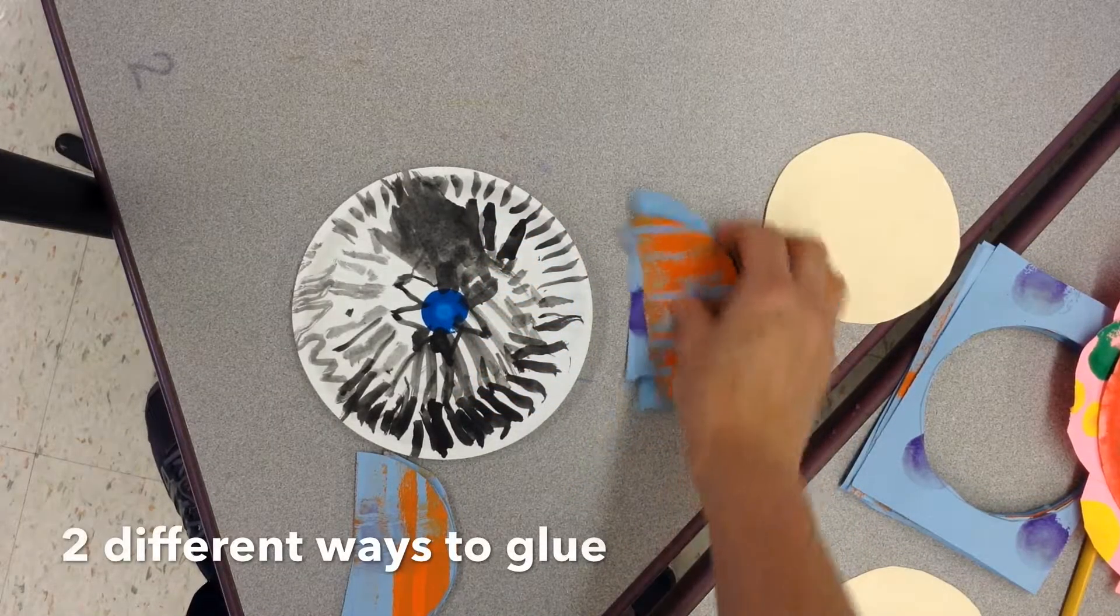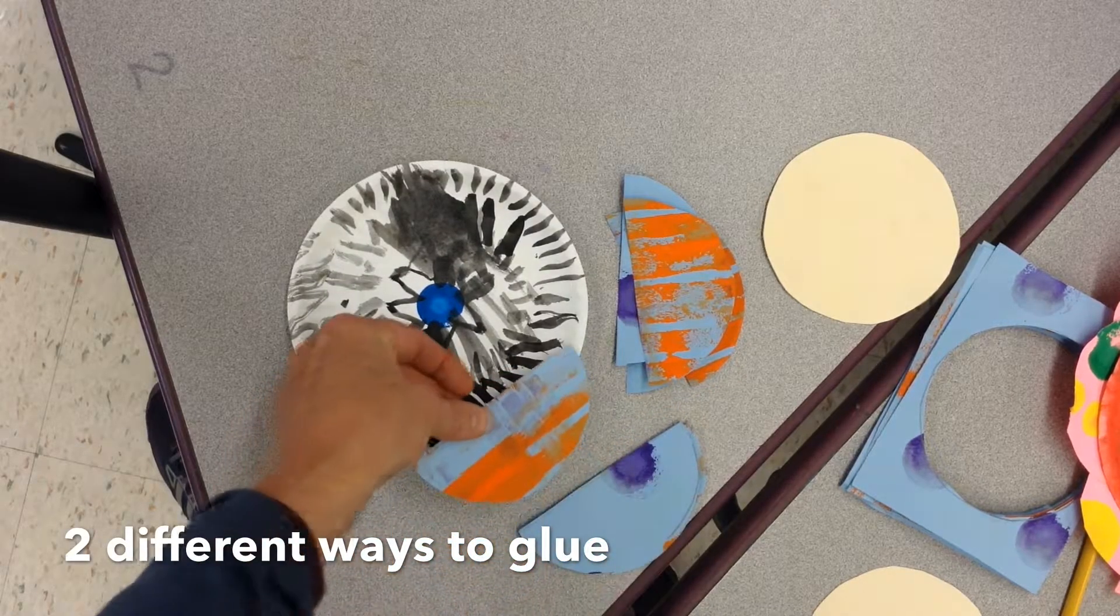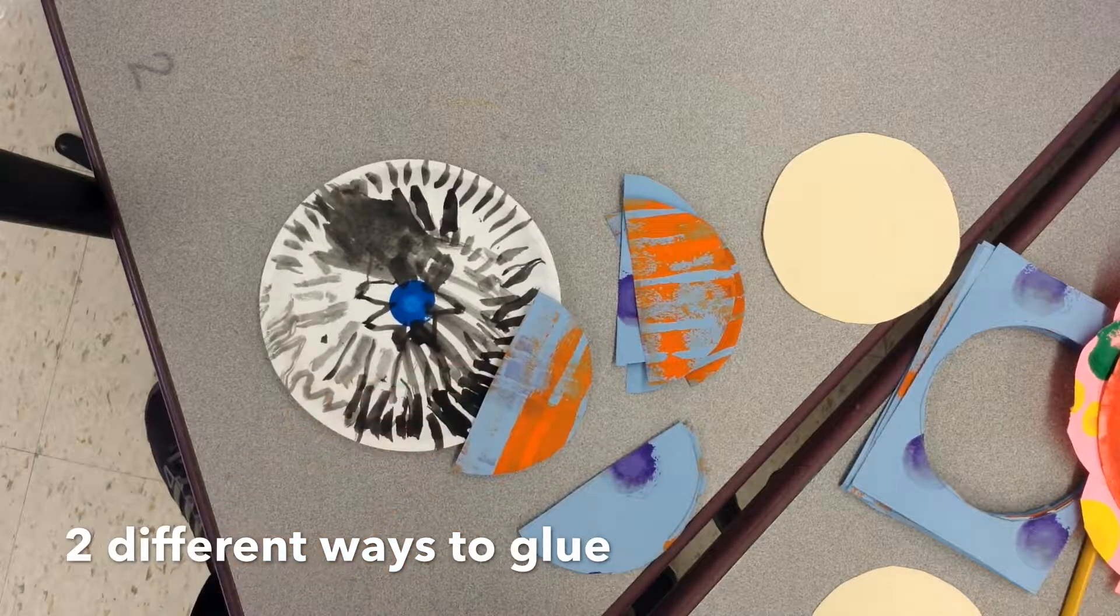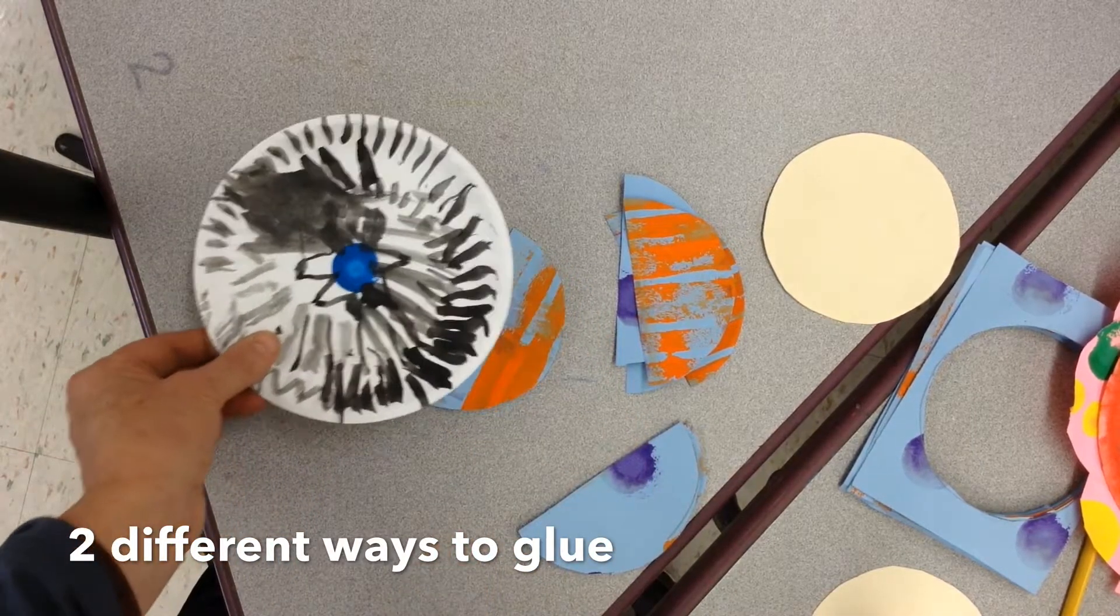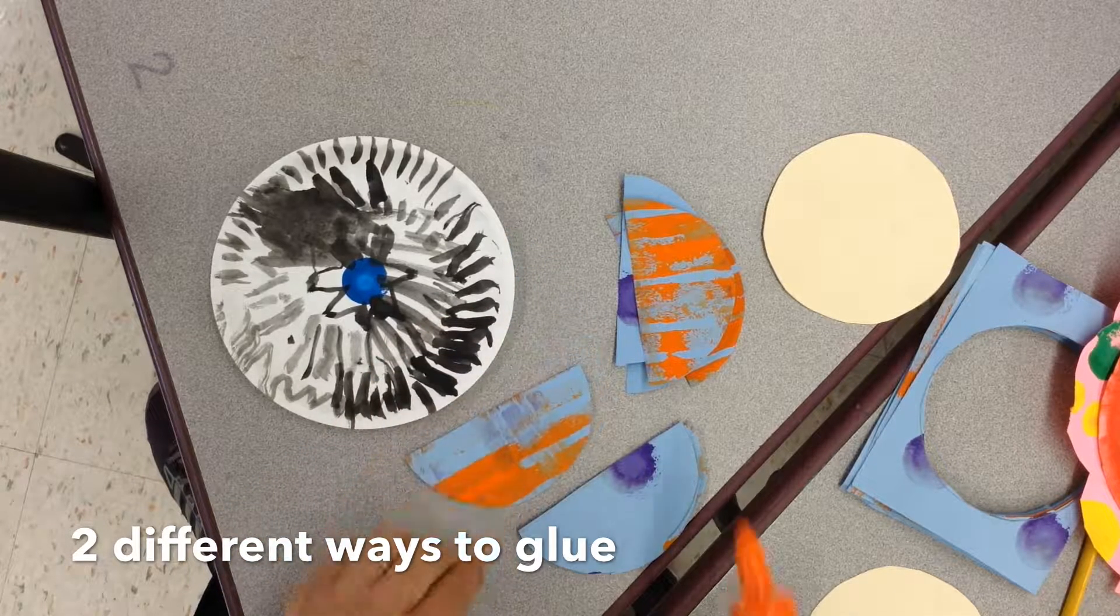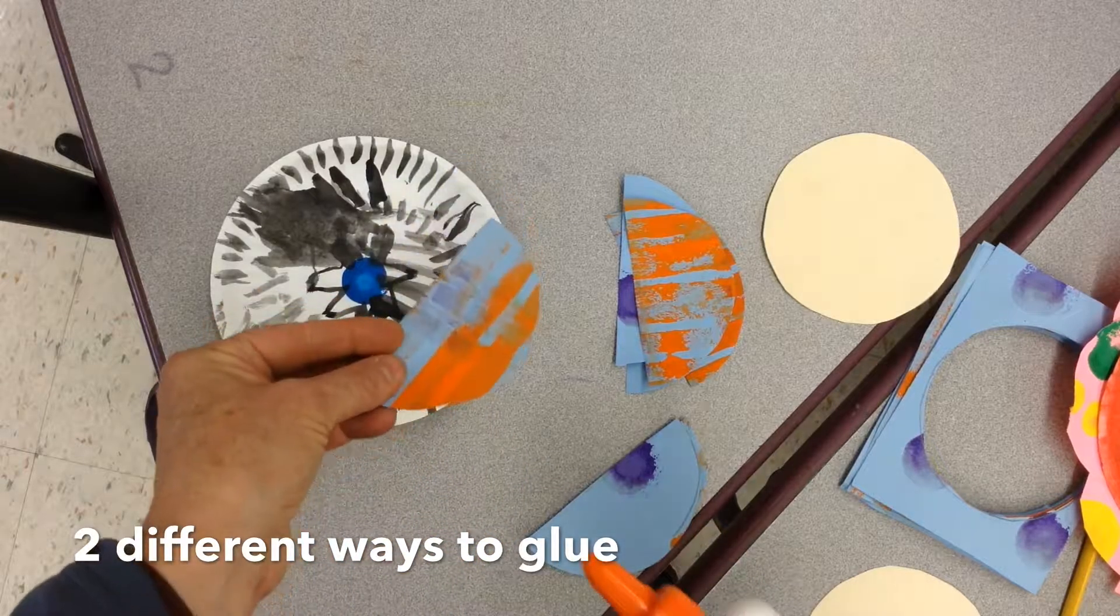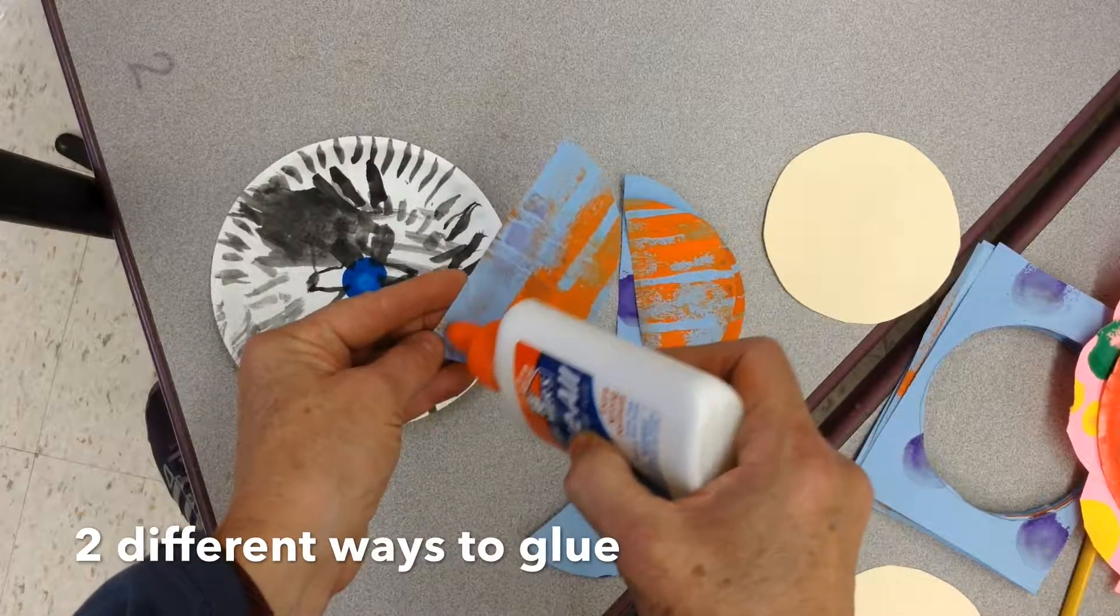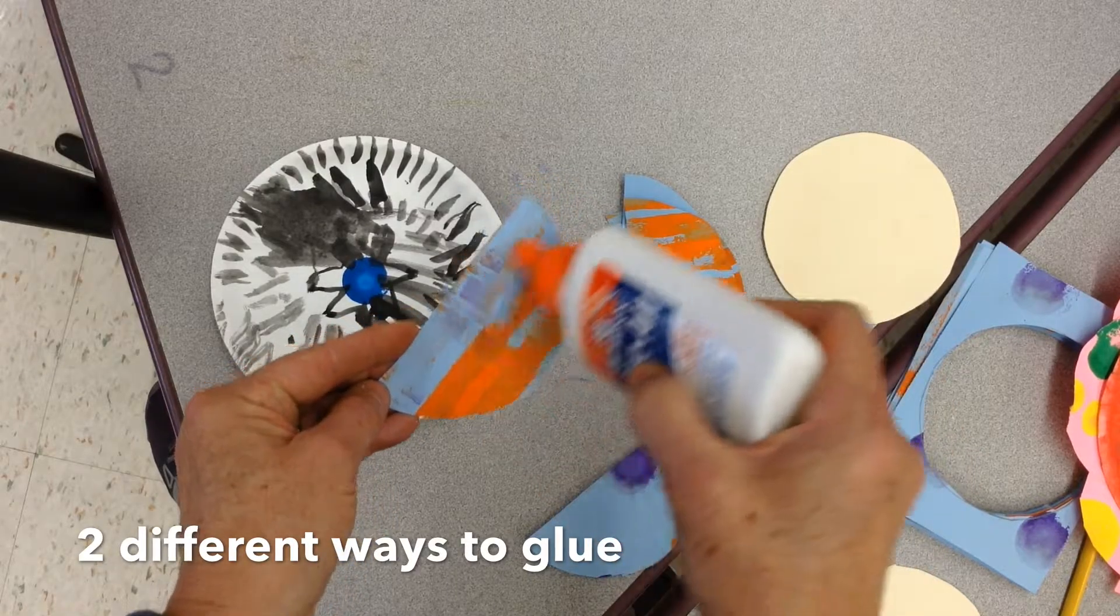And then you're gonna glue it to your flower. There are two ways you can glue it to your flower. You can have the petals on top, or you can glue your petals behind. And you only need to glue this much of the petal, because that's the only spot it's going to stick to your paper plate.